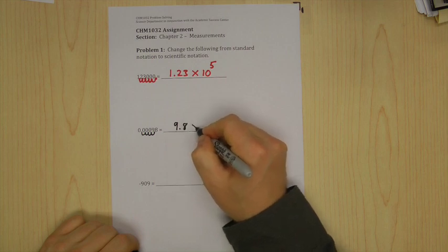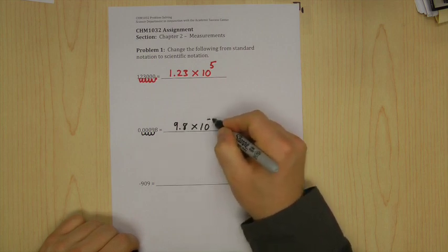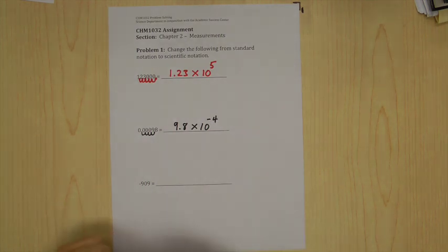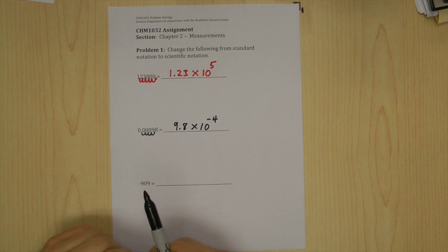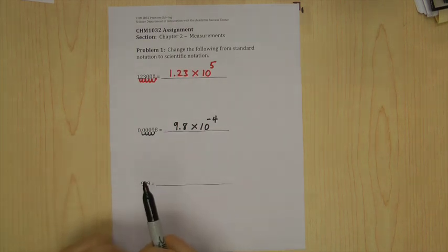All right, so now the answer here would be 9.8 times 10, but now it's negative 4. So what this is saying is it's 9.8 multiplied by 1 over 10 to the 4. So the negative sign means reciprocal, or the 1 over 10 to the 4, is basically what it means.